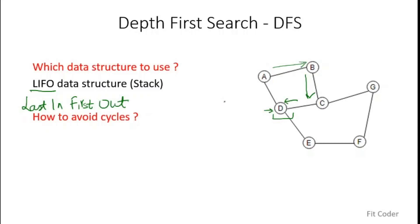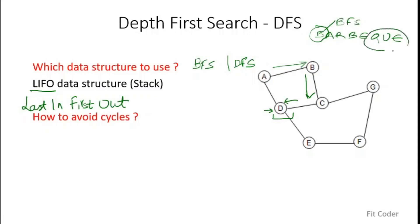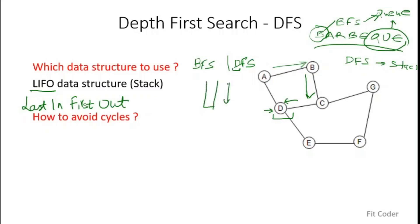Many students face difficulty remembering which data structure to use for BFS versus DFS. As I mentioned in the previous video, you can remember the word 'barbecue': B is for BFS and Q stands for queue, so BFS uses a queue. Also, DFS relates to depth, and stack relates to height — and height and depth are interrelated — so DFS uses a stack.